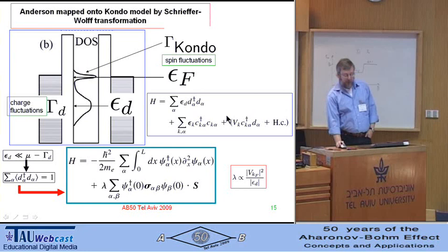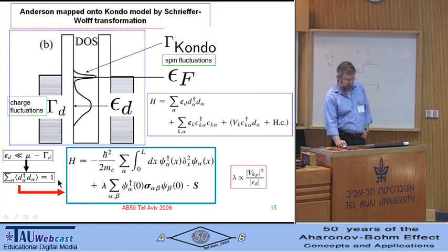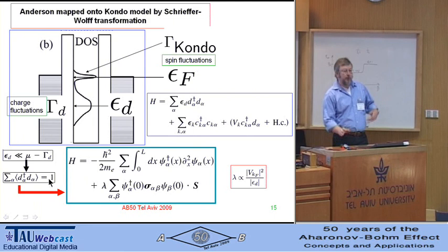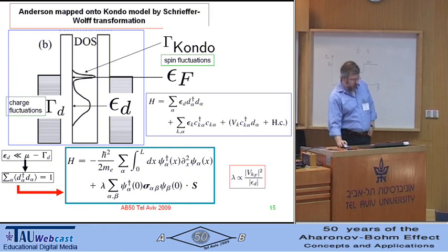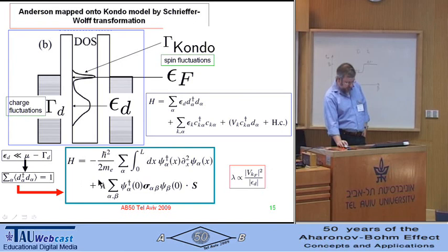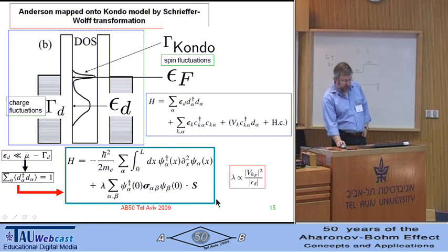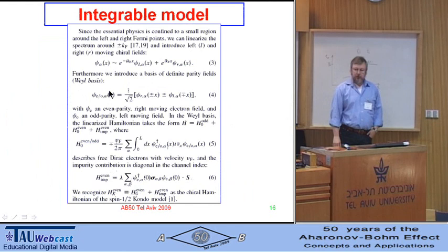We start from the Anderson Hamiltonian, then map it onto a Kondo model by a Schrieffer-Wolf transformation. We have a Hamiltonian in real space, valid in the regime where we have one electron occupying the level of the magnetic impurity, as needed for seeing the Kondo effect. This Hamiltonian must be further massaged in order to get a truly integrable model — it is not integrable as written, but in several steps we can make it into one.